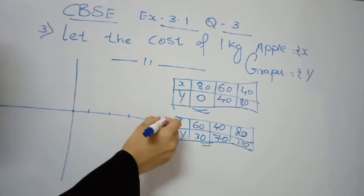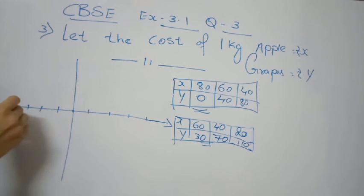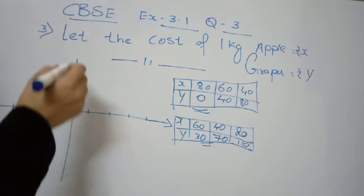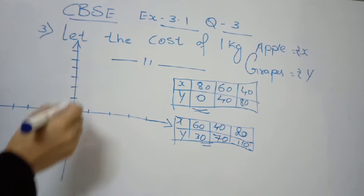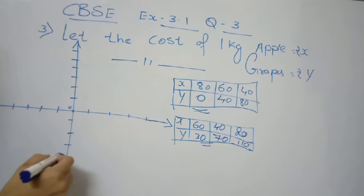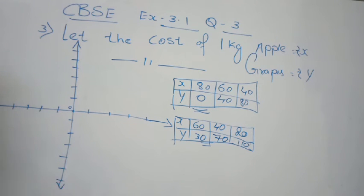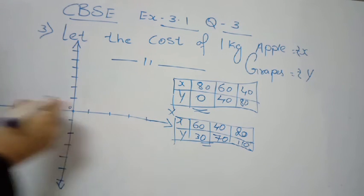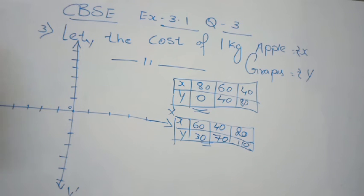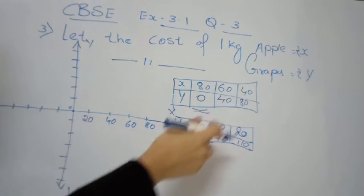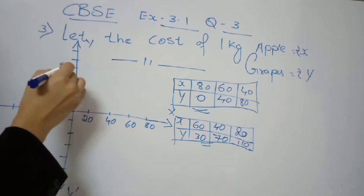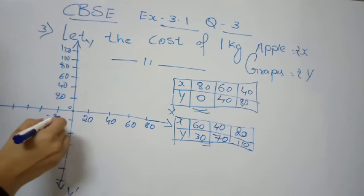Now we will represent this graphically. Draw the x-axis and y-axis with the origin at 0. Also draw y-dash and x-dash directions. Set the scale: one centimeter equals a certain number of units. On the x-axis mark values 20, 40, 60 on the right side and negative direction on the left. On the y-axis mark values 20, 40, 60, 100 upward.